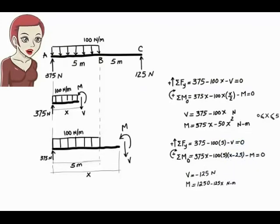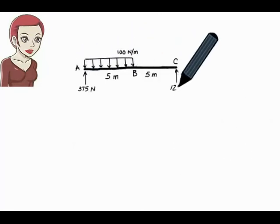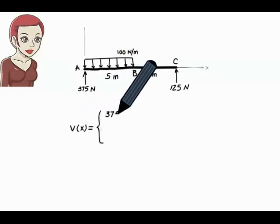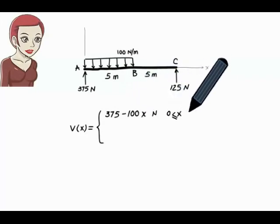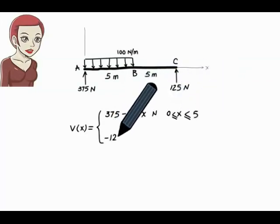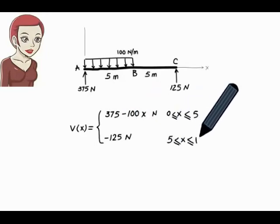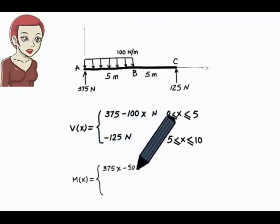In summary, shear in the beam is represented using two equations, and moment in the beam is also represented using two equations, one pair for each segment.